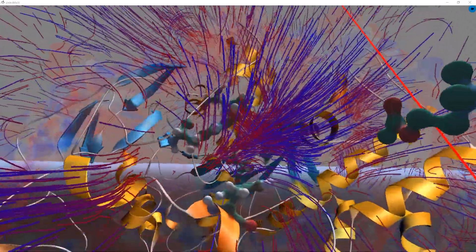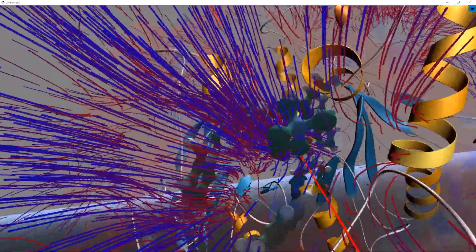As the substrate reaches the terminus of the catalytic gorge, it's going to interact with what is known as the catalytic triad.